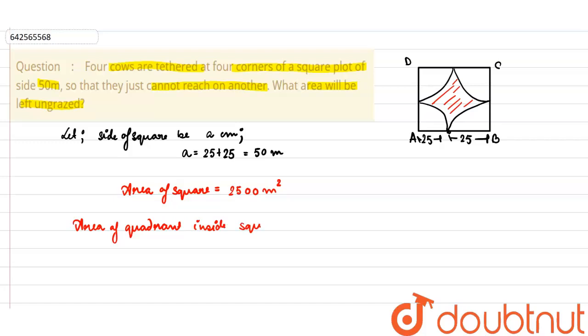Inside the square. Now that is equal to 1 by 4 pi r square. Pi r square is the area of a circle. So quadrants area will be 1 by 4 pi r square which is equal to 1 by 4 into 22 by 7 into 25 square.